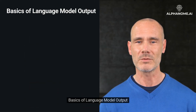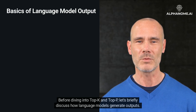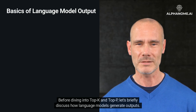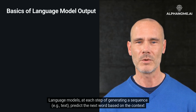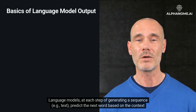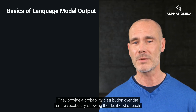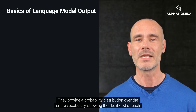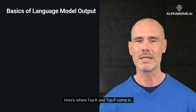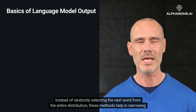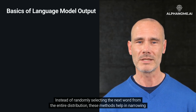Basics of Language Model Output. Before diving into Top K and Top P, let's briefly discuss how language models generate outputs. Language models, at each step of generating a sequence — for example, text — predict the next word based on the context of the preceding words. They provide a probability distribution over the entire vocabulary, showing the likelihood of each word being the next in the sequence. Here's where Top K and Top P come in: instead of randomly selecting the next word from the entire distribution, these methods help in narrowing down the choices.